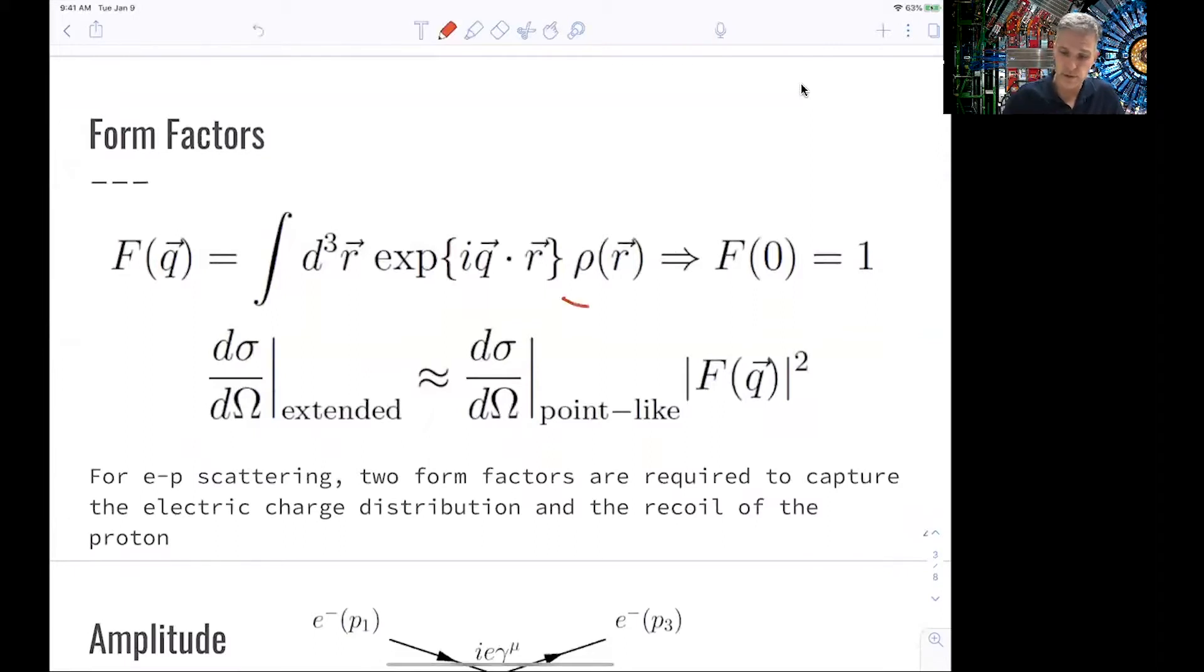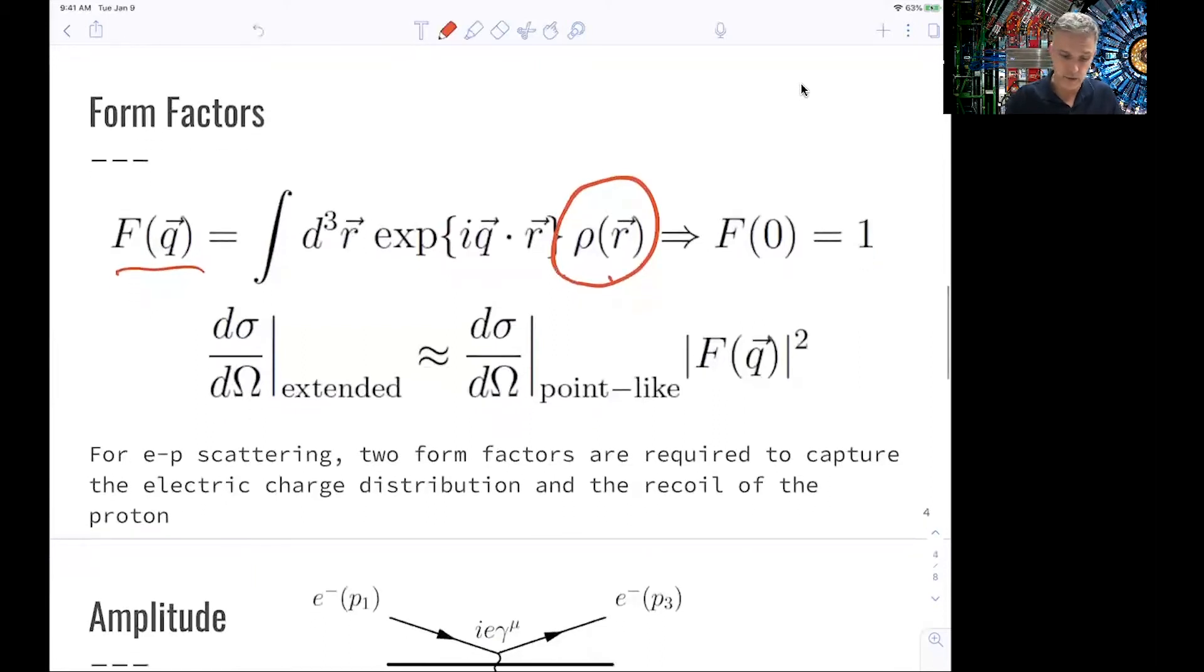One way to do this is by analyzing the Fourier transform of the charge density functions. Remember, the photon couples to charged particles. So when we use a photon to probe a proton, it probes a charge distribution inside the proton. We build a Fourier transform of the charge distribution and then can extend the cross-section from a point-like cross-section via this Fourier transform of the charge distribution.